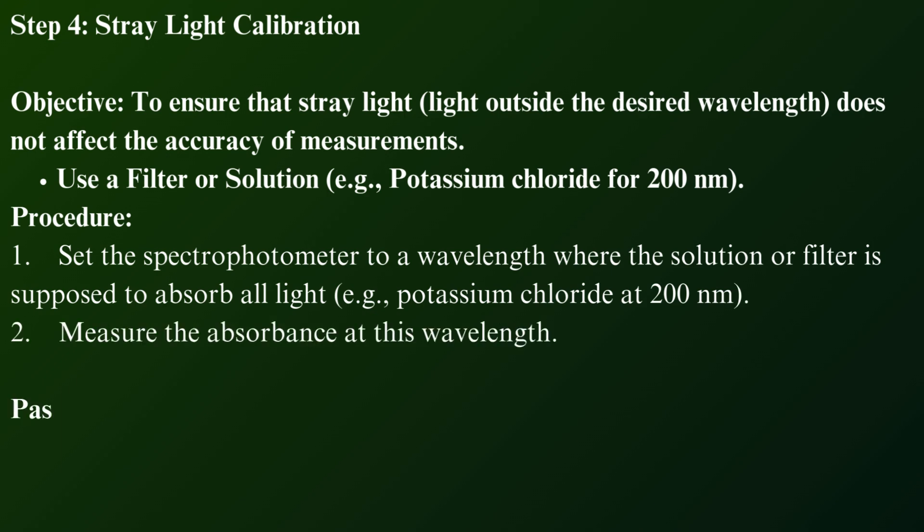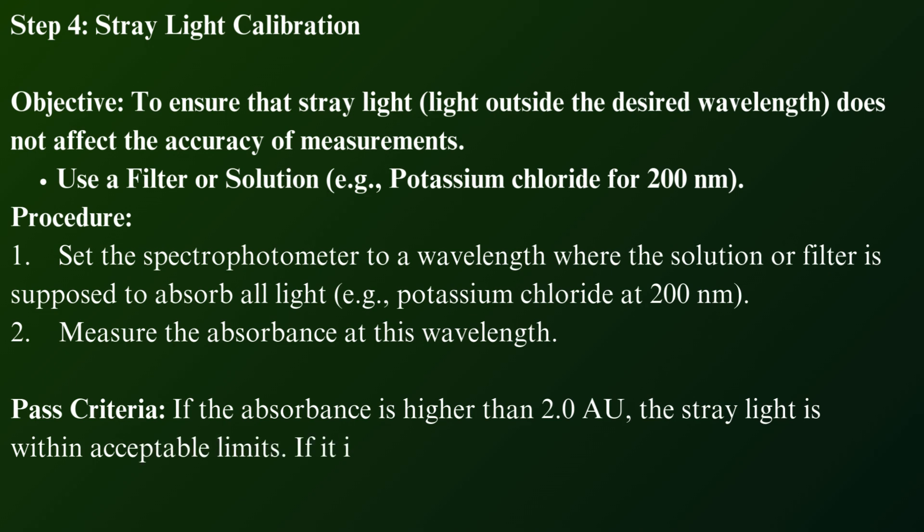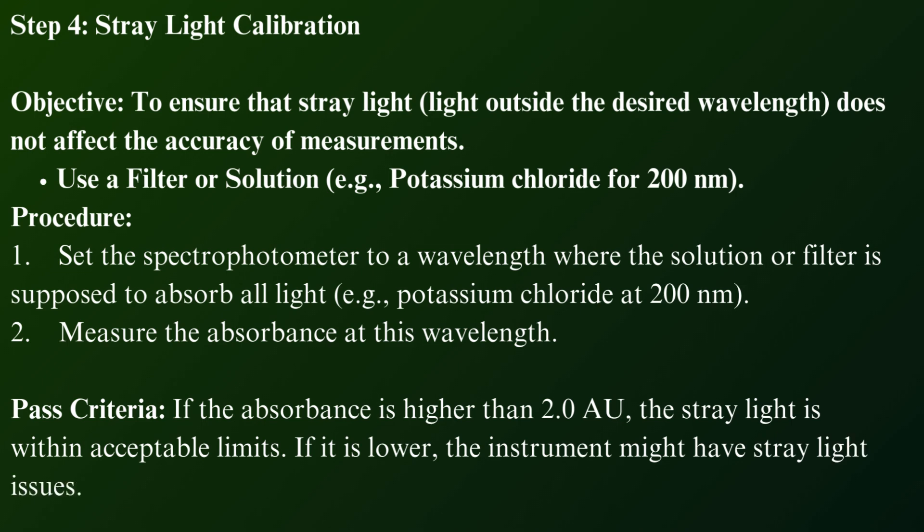Measure the absorbance at this wavelength. Pass criteria: If the absorbance is higher than 2 AU, the stray light is within acceptable limits. If it is lower, the instrument might have stray light issues.